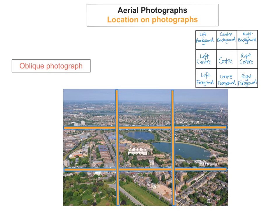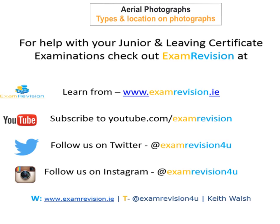We've looked at the different types of photographs — vertical and oblique — how to identify which is which, and how to locate certain areas on each type. That's the end of our tutorial. If you enjoyed it, please leave some feedback. For more videos on photographs, maps, or anything on the Junior Certificate course, check out examrevision.ie or subscribe to our YouTube channel at youtube.com/examrevision. You can also follow us on Twitter and Instagram for the latest updates. Thank you.